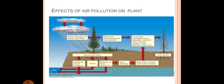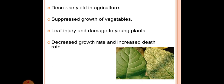This figure shows the effects of air pollution on plant: decreased yield in agriculture, suppressed growth of vegetables, leaf injury and damage to young plants, decreased growth rate and increased death rate.